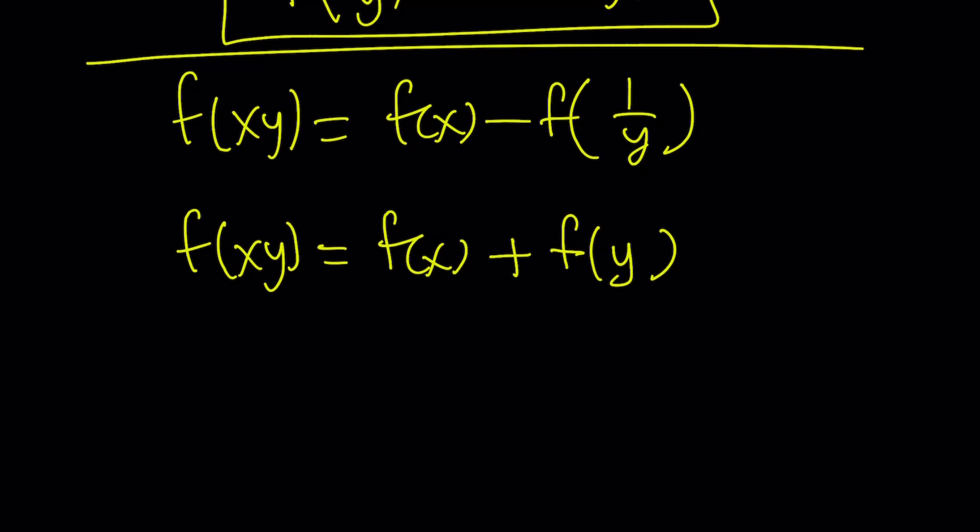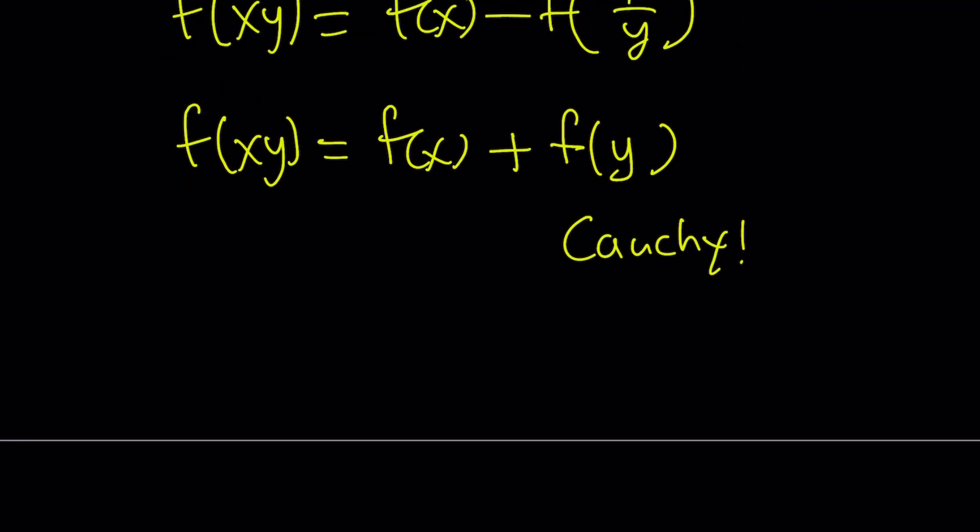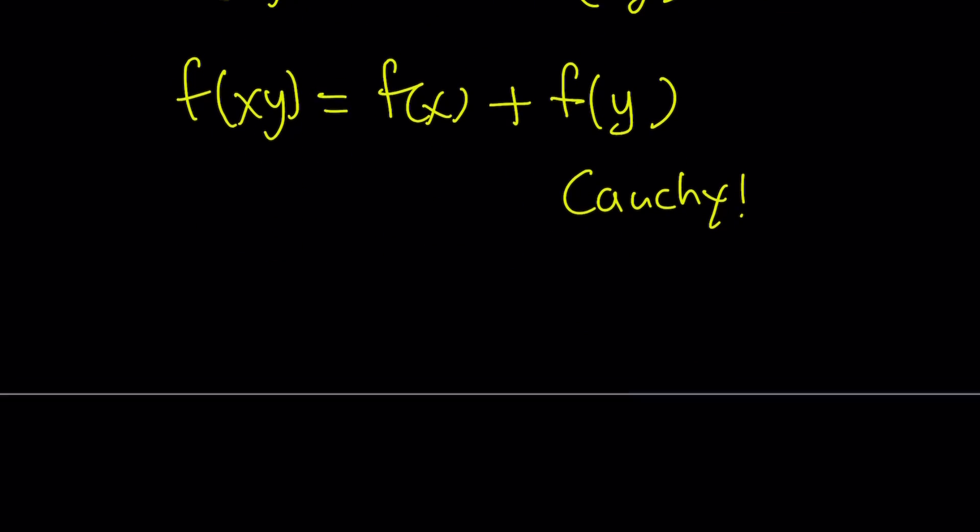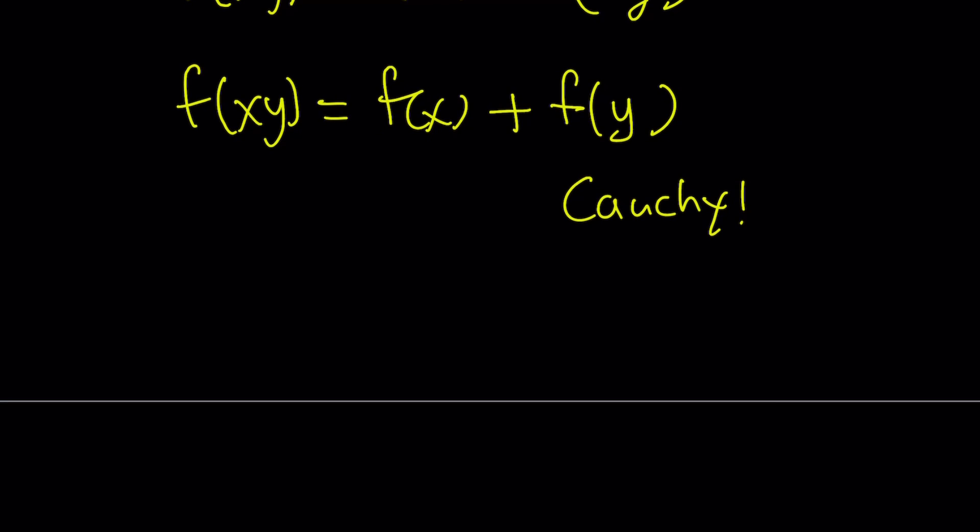We got Cauchy. Awesome. So Cauchy tells us that if this function is good, continuous, so on and so forth, it has some nice properties, then it has a good solution. And the solution is going to be f of x equals k times ln x. And remember, the x values are always positive because the domain is positive real numbers. And this is going to be well defined. Awesome.